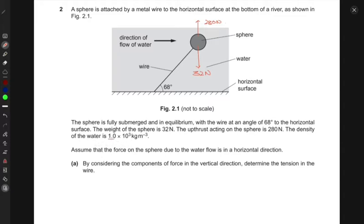You're saying that the density of the water is also specified and assume that the force on the sphere due to the water flow is in the horizontal direction. By considering only the components of the force in vertical direction, determine the tension in the wire. We know that there would be some tension inside this wire T and this tension has two components, a horizontal and a vertical component. This vertical component is the sine of this angle 68 degrees. So if you look at these components and the statement that it says that they are in equilibrium.